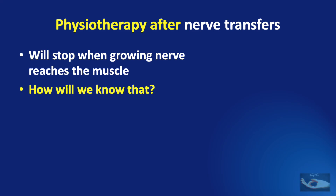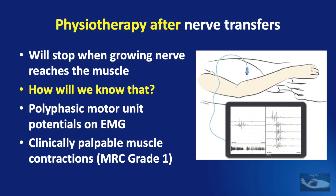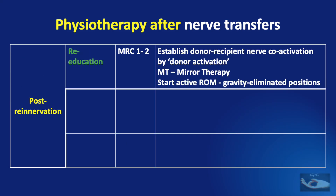This pre-innervative period will stop when the growing nerve reaches the muscle. But how will we know that the nerve has reached the muscle? The most reliable indicator is polyphasic motor unit potentials seen on EMG studies of the muscle waiting to get re-innervated. The other clinical parameter is palpable muscle contractions, that is MRC grade 1, but this is very subjective.